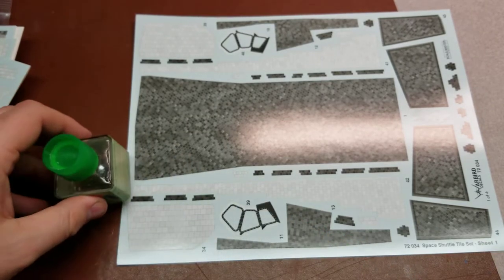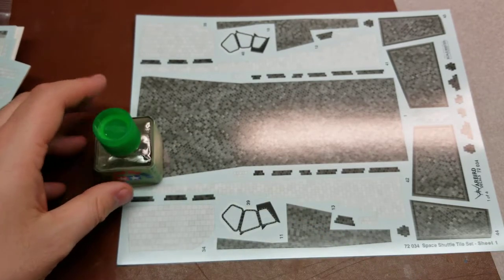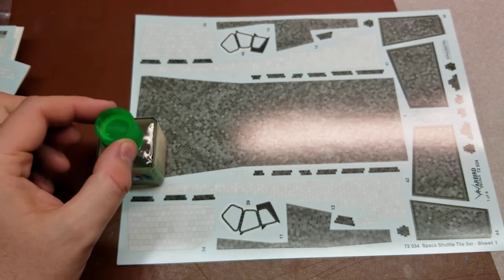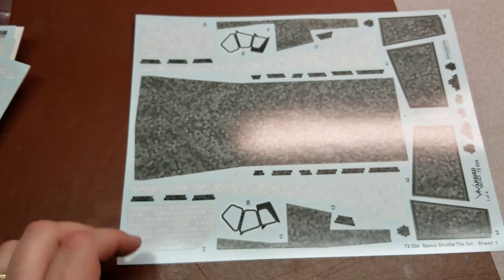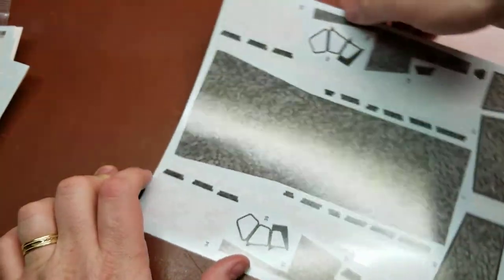Just to put that into a bit of a comparison, for the size of the sheet, this will be a Tamiya bottle just sitting right there on the corner. Extremely large sheets. These are full A4 size paper.